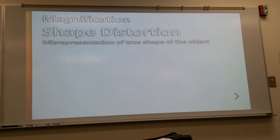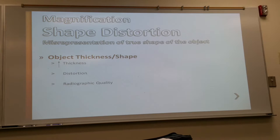Shape distortion. This is the misrepresentation of the shape of the object. And so there are several things that can affect this. The object thickness or the shape of the object can lead to shape distortion. The thicker the body part is, the more distortion you're going to have. And what about radiographic quality? Going down. So again, you don't have a lot of choice with this. Your patient is the size and shape that they are. So you will have very little control over this one.